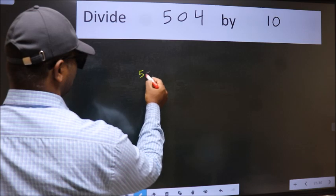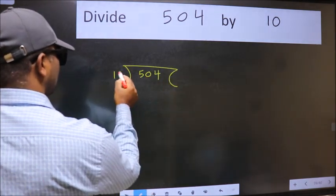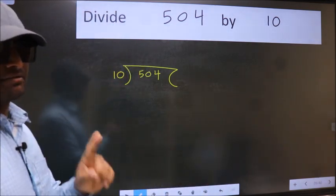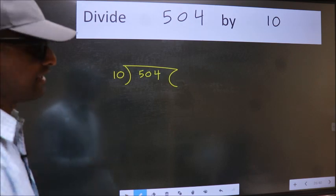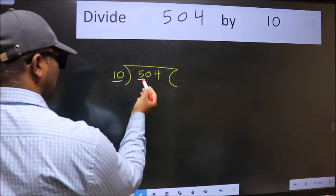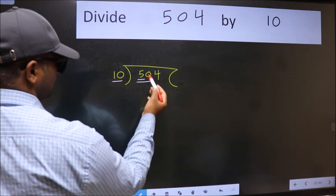5, 0, 4 here. 10 here. This is your step 1. Next, here we have 5 and here 10. 5 is smaller than 10, so take two numbers: 50.